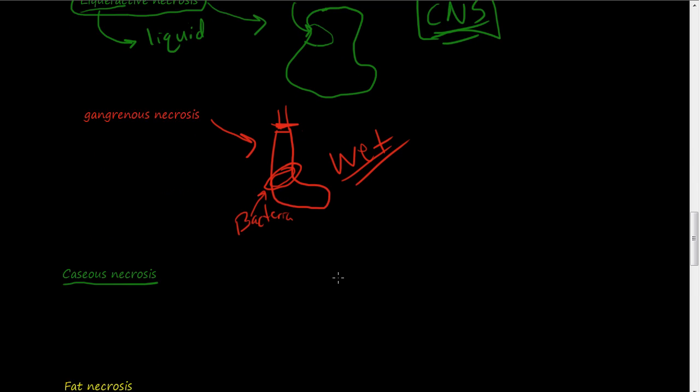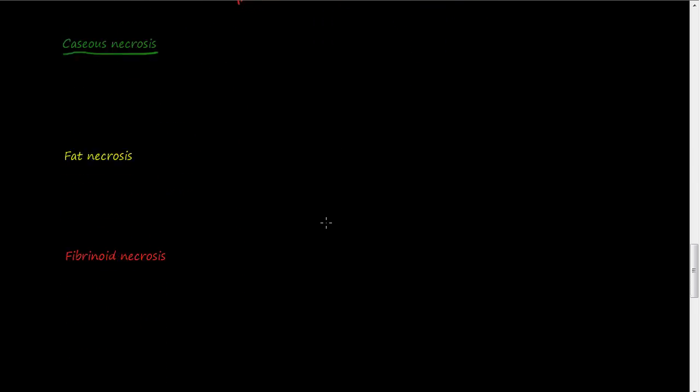So in the case of caseus necrosis, caseus is cheese, cheese-like. I hate to use food and pathology in the same sentence or analogies because it just kind of ruins it. So caseus is cheese-like, it looks like cheese, and caseus necrosis is usually involved in tuberculosis infections. So if you think of tuberculosis, think of caseus necrosis or vice versa.